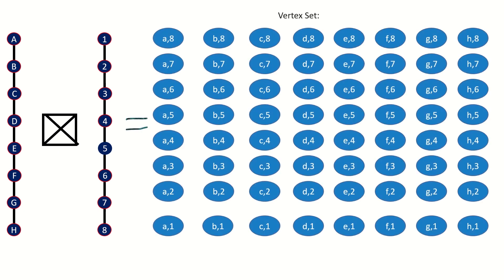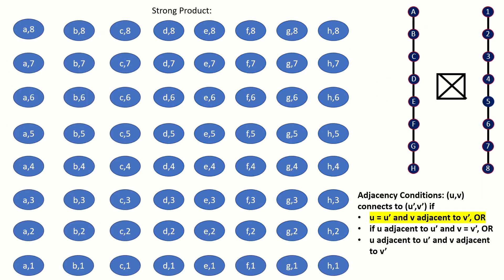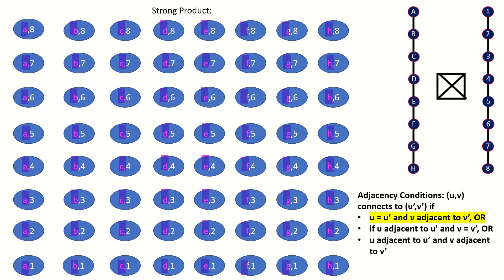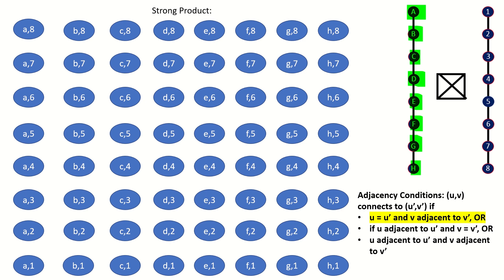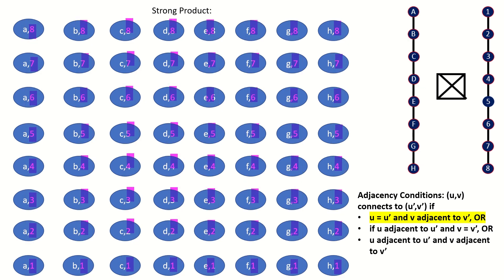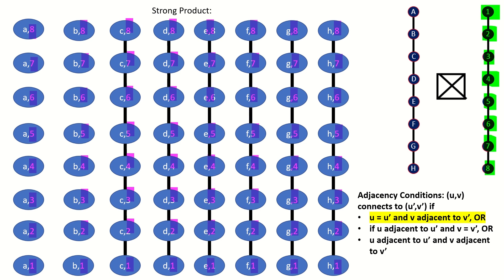Think of the strong product of two path graphs on eight vertices, one labeled with letters A through H and the other labeled with numbers 1 through 8. The strong product of these two graphs will have 64 vertices, each corresponding to an ordered pair of vertices from the path graphs. According to the first adjacency rule for strong products, two vertices in the strong product are connected if the first entries in their ordered pairs — in this case their letters — are the same vertex in the first graph, and their second entries — in this case their numbers — are adjacent vertices in the second graph.